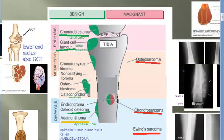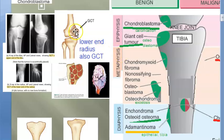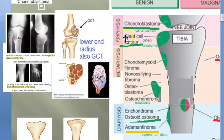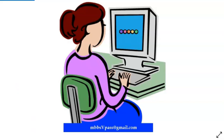Giant cell tumor usually affects the lower end of the radius and the lower end of the femur. In giant cell tumor, you will see soap bubble appearance and honeycomb appearance on imaging. Now let us move to metaphysis.